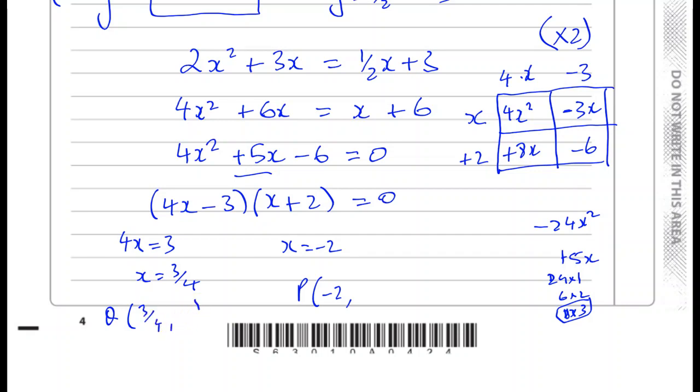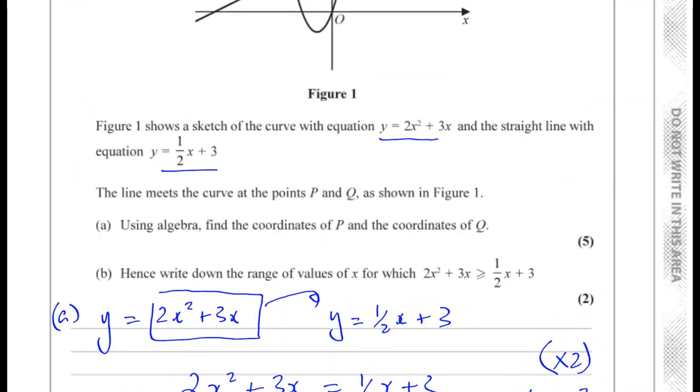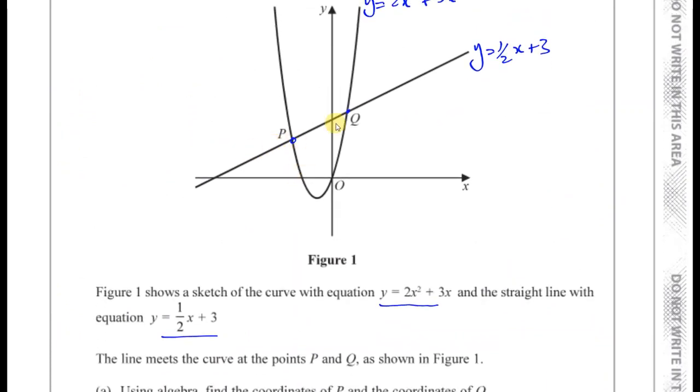As you can see here, P is the one on the negative side and Q is the one on the positive side. So this is minus 2 and this is 3 quarters.